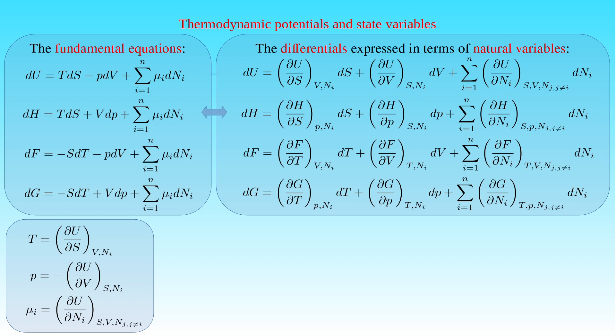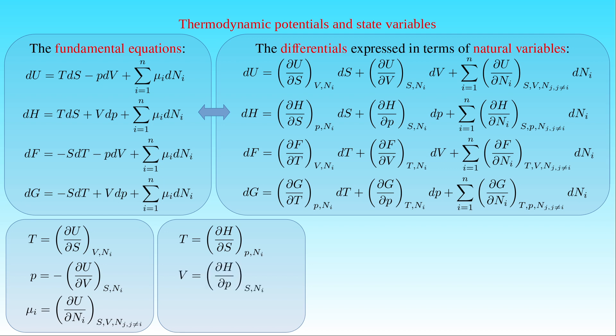Comparing the equations in the second line gives another three expressions. The first states that the temperature T is equal to the partial derivative of the enthalpy H with respect to the entropy S at constant pressure P and number of particles Nᵢ. The second states that the volume V is given by the partial derivative of H with respect to P at constant S and Nᵢ. The third states that the chemical potential μᵢ is equal to the partial derivative of H with respect to Nᵢ at constant S, P, and Nⱼ where j ≠ i.